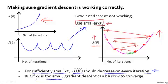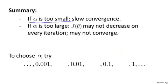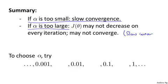But of course, you also don't want your learning rate to be too small, because if you do that, gradient descent can be slow to converge. If alpha were too small, you might end up taking just minuscule baby steps, taking a lot of iterations before you finally get to the minimum. To summarize: if the learning rate is too small, you can have a slow convergence problem. If the learning rate is too large, J of theta may not decrease on every iteration and may not even converge. In some cases, if the learning rate is too large, slow convergence is also possible, but the more common problem is that J of theta may not decrease on every iteration.